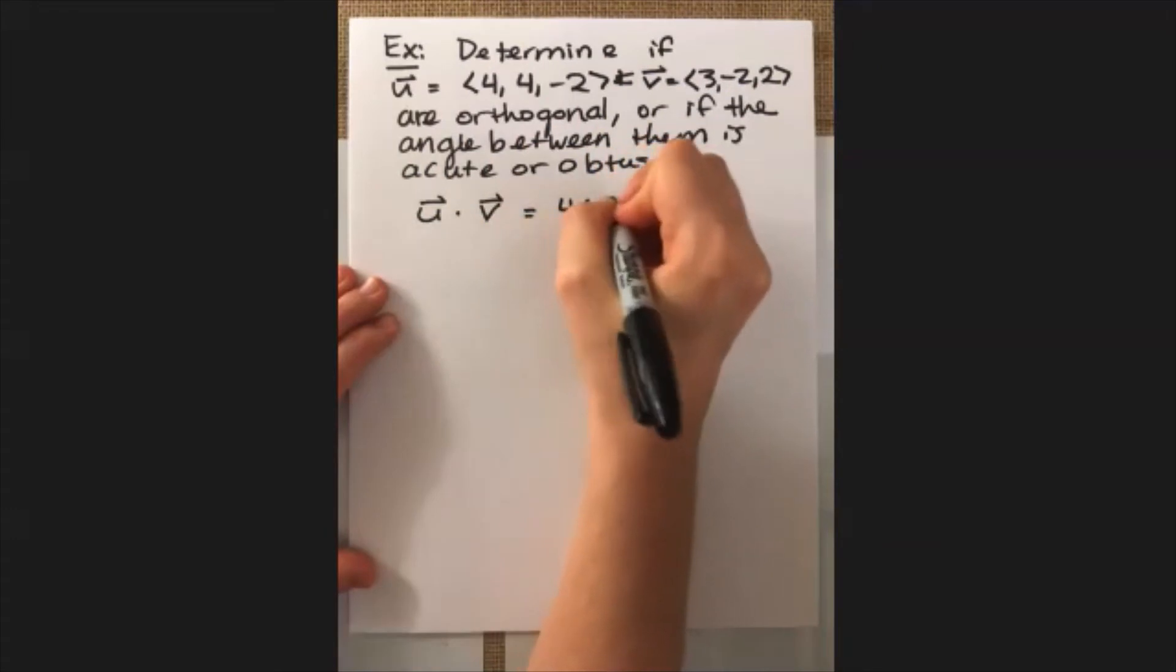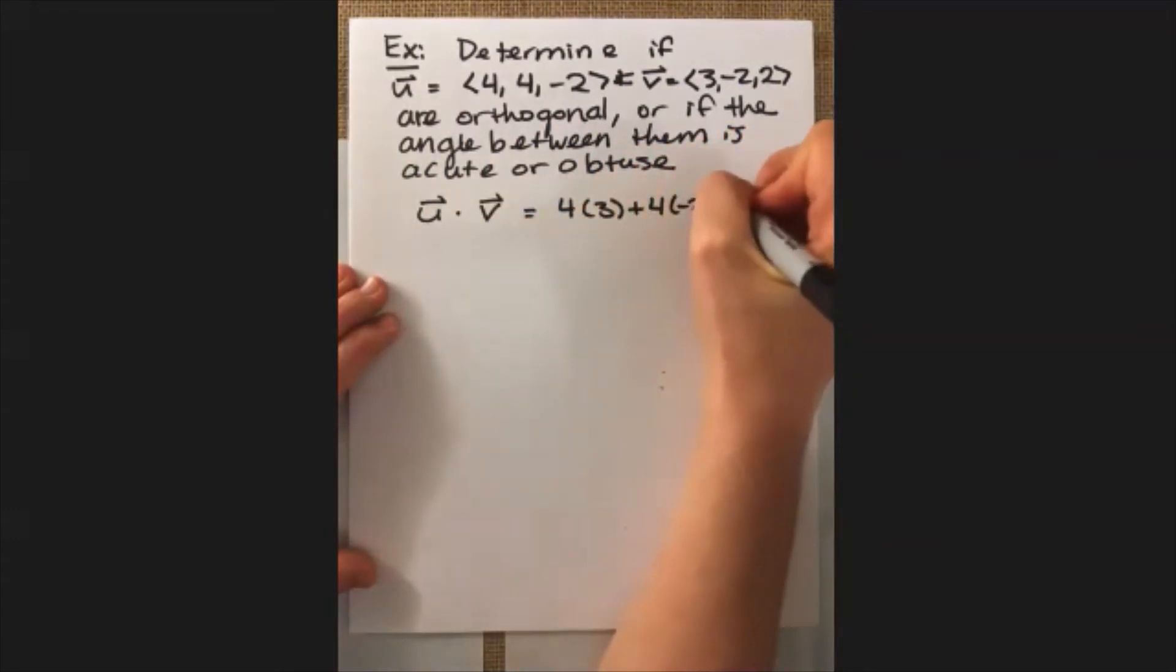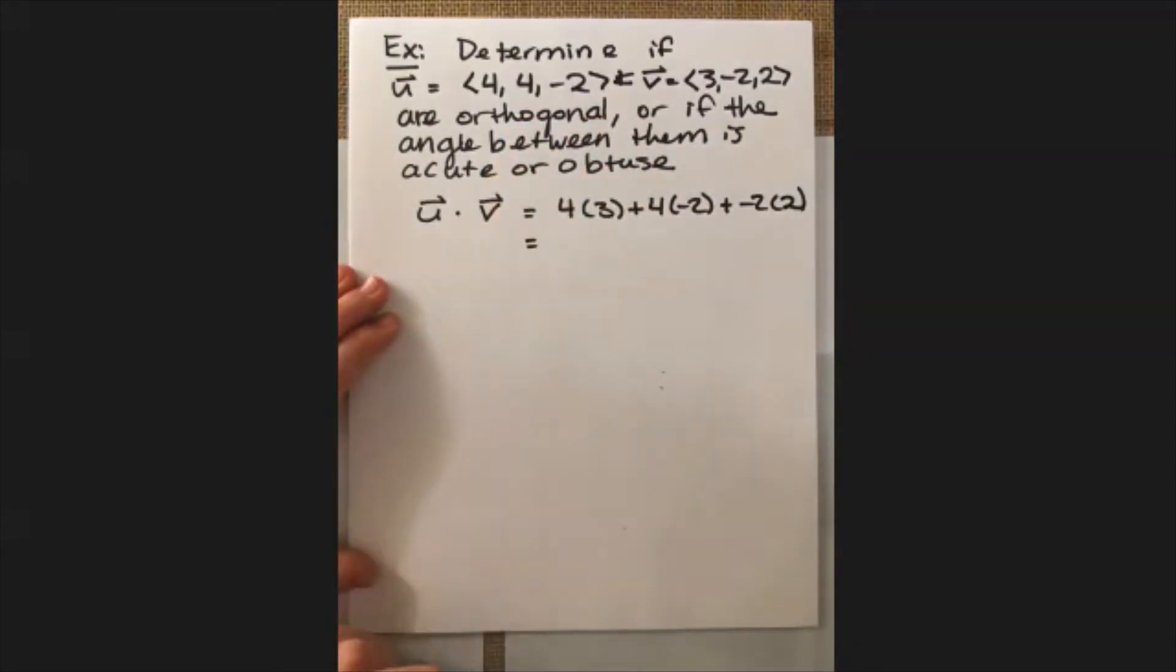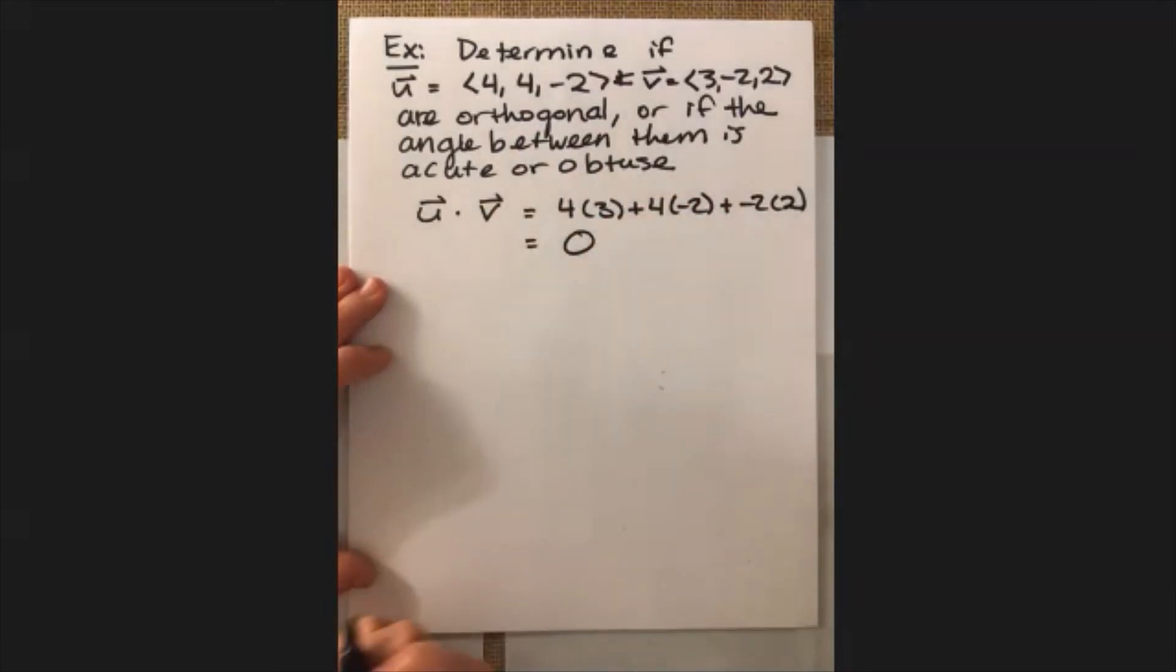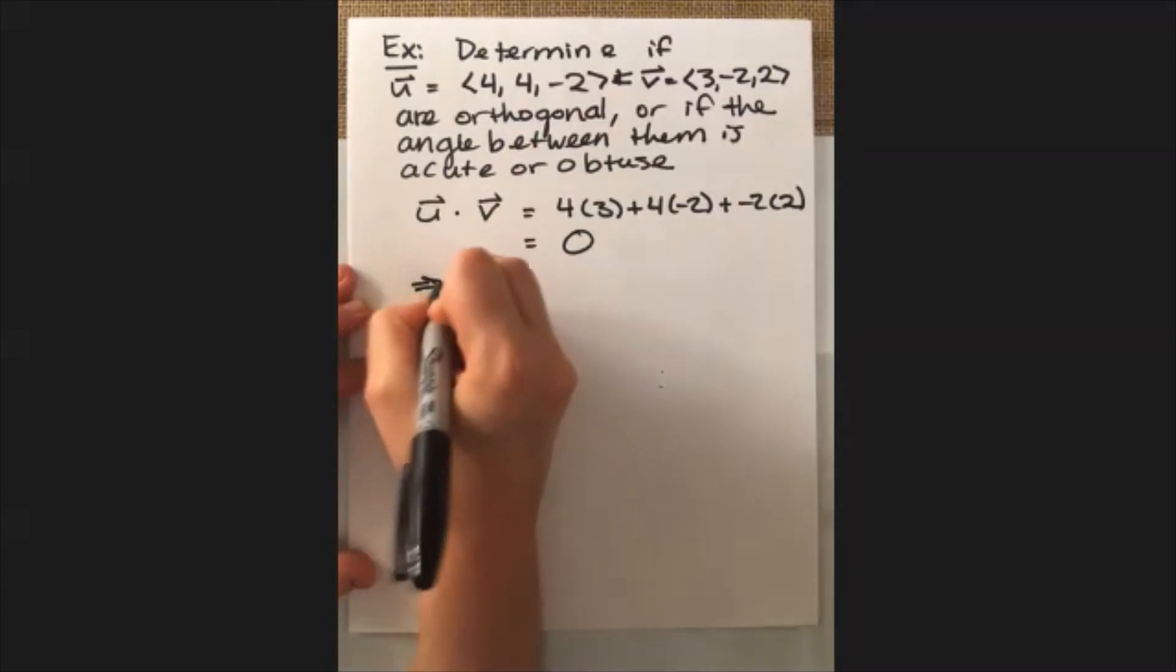So we're going to take their dot product. So it's 4 times 3 plus 4 times -2 plus -2 times positive 2. Add all that up, and you're going to get zero. So since their dot product is zero, this then means that they are orthogonal.